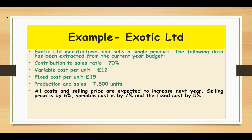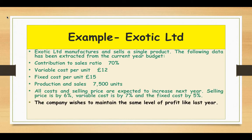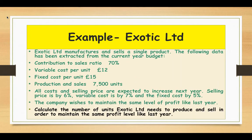All costs and selling price are expected to increase next year: selling price by 6%, variable cost by 7%, and fixed cost by 5%. The company wishes to maintain the same level of profit as the current year. Since the current year profit is not given, we have to calculate it. The question asks us to calculate the number of units Exotic Limited needs to produce and sell in order to maintain the same profit level.